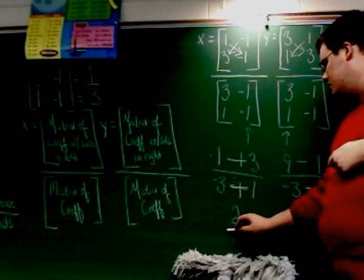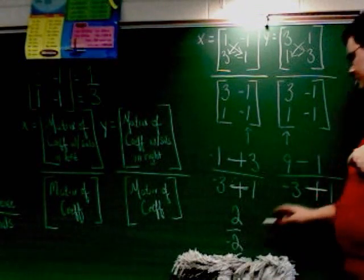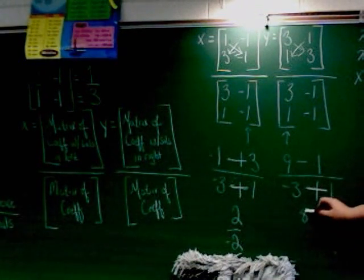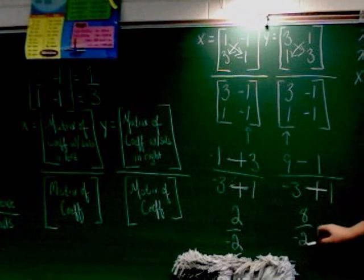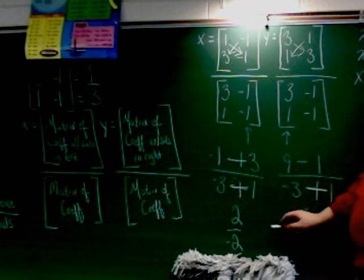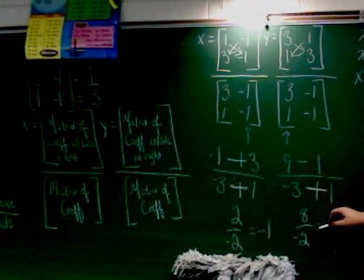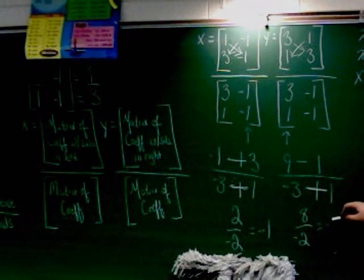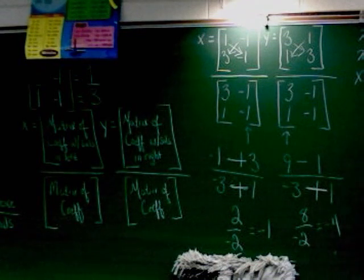Negative 1 plus 3 is 2. Negative 3 plus 1 is negative 2. 9 minus 1 is 8. We know the bottom's the same. Divide them. Top divided by bottom. 2 divided by negative 2 is negative 1. 8 divided by negative 2 is negative 4. There's your x and your y.